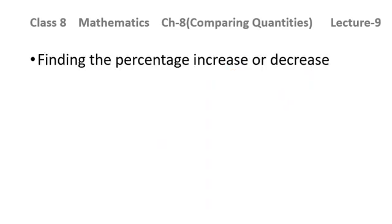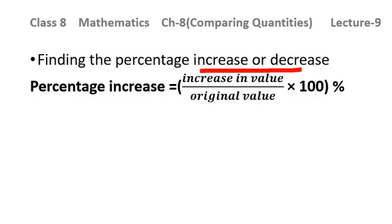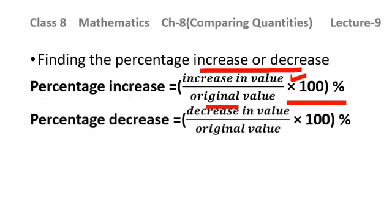If I need to find the percentage increase or decrease, this is a very important concept with a simple formula. Percentage increase = increase in value over original value into 100%. First, find the increase in value, then place the original value in the denominator into 100%. For example, the price of a scooter was Rs. 34,000 last year; this year it increased to 40,800 — find the percentage increase. Similarly, percentage decrease = decrease in value over original value into 100%.